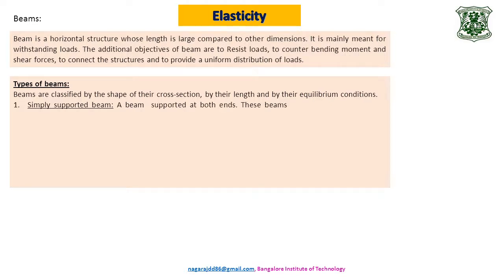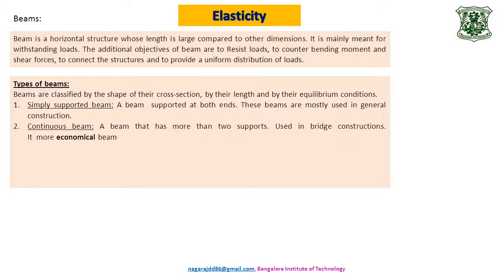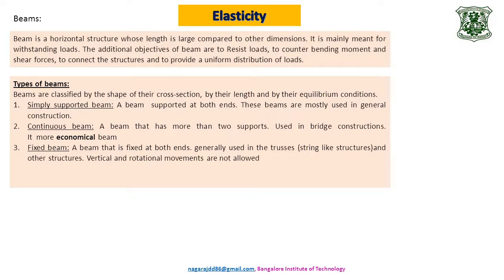Number one, simply supported beam: a beam supported at both the ends. These beams are mostly used in general constructions. Continuous beam: a beam that has more than two supports, used in bridge constructions. Actually continuous beam is a more economical beam. Fixed beam: a beam that is fixed at both the ends, generally used in trusses and other structures. Please notice, vertical and rotational movements are not at all allowed. Cantilever beam: a beam that is fixed at one end and free on the other end, used in bridges and buildings. Your balcony is a cantilever beam.